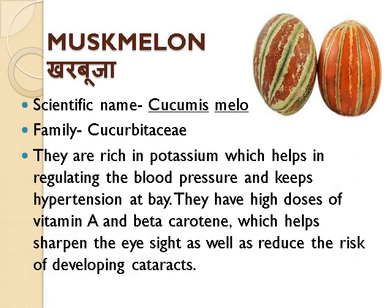Muskmelon, Kharbooza, scientific name Cucumis melo, family Cucurbitaceae. They are rich in potassium, which helps in regulating blood pressure and keeps hypertension at bay. They have high doses of vitamin A and beta-carotene, which help sharpen eyesight and reduce the risk of developing cataracts.